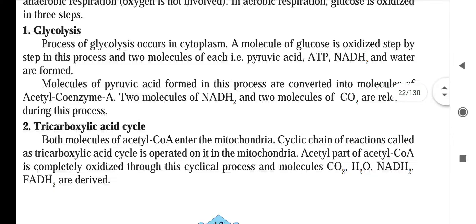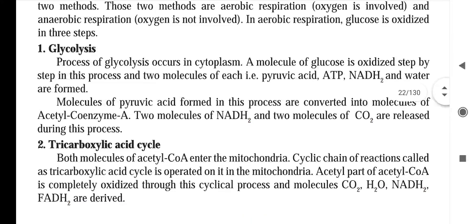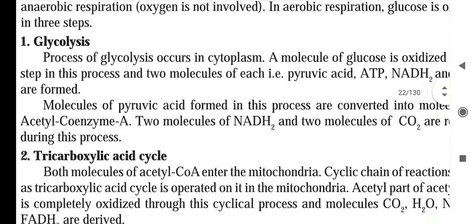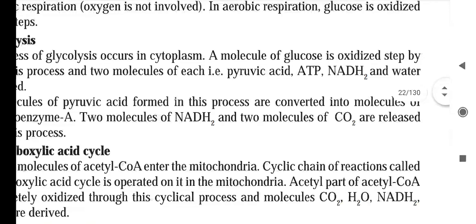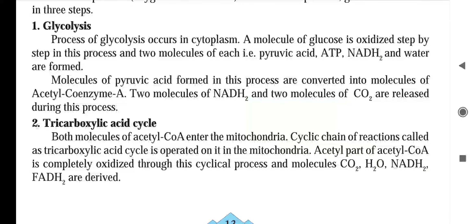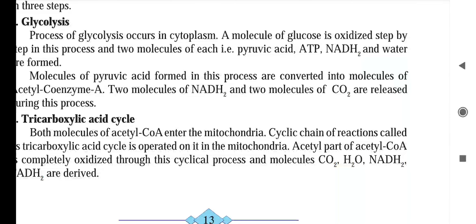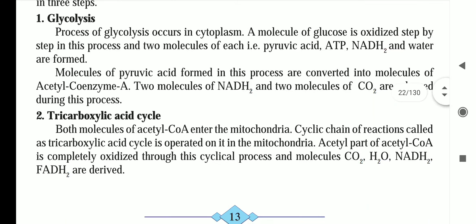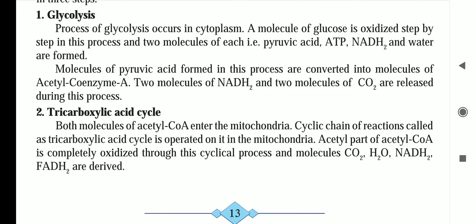In aerobic respiration, glucose is oxidized in three steps. The first process is glycolysis, which occurs in the cytoplasm. A molecule of glucose is oxidized step by step, and two molecules each of pyruvic acid, ATP, NADH2, and water are formed. The pyruvic acid is then converted into acetyl coenzyme A, releasing two molecules of NADH2 and two molecules of carbon dioxide.